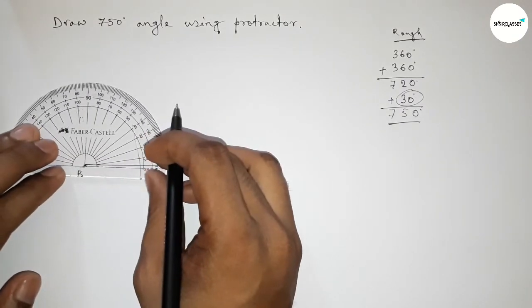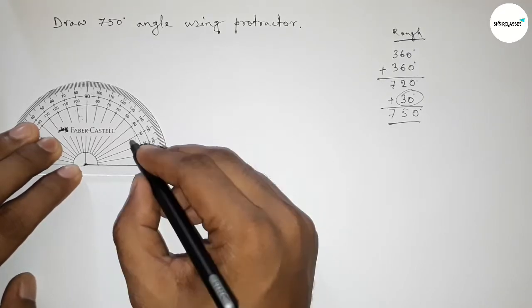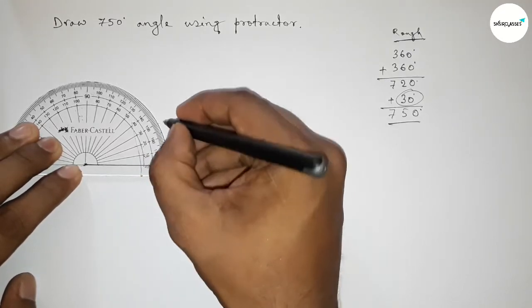First drawing here a 30-degree angle on point B. So this is a 30-degree angle this way.